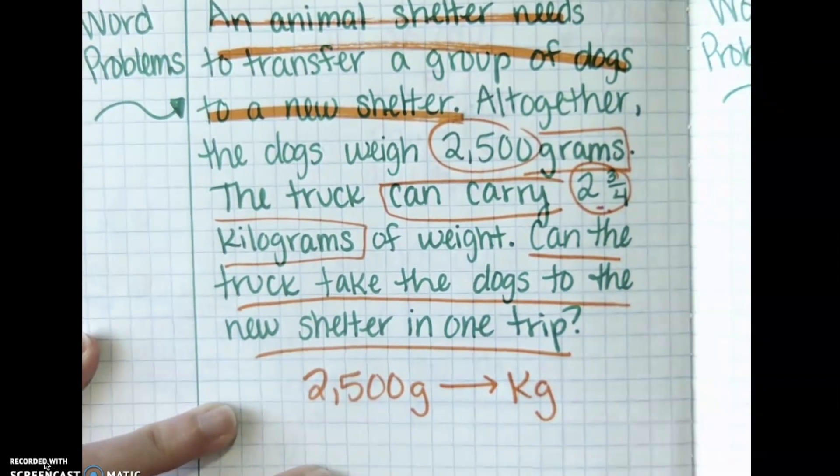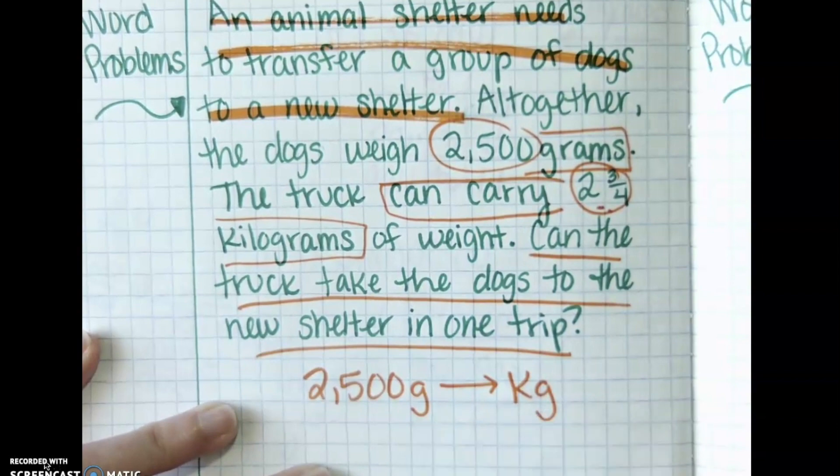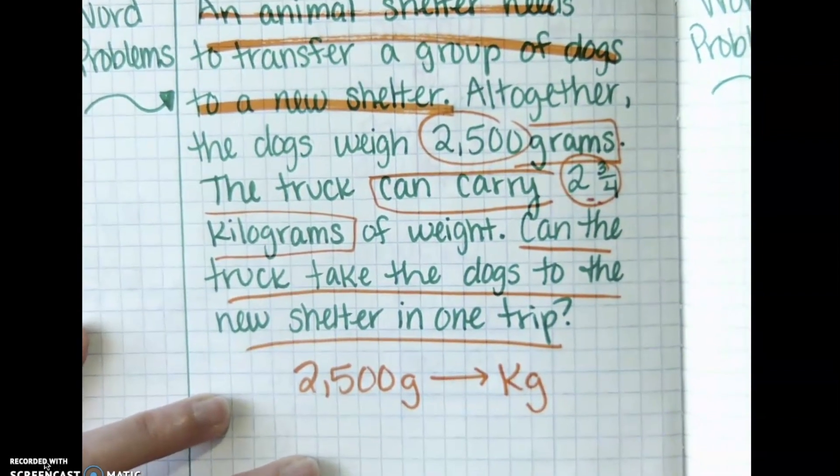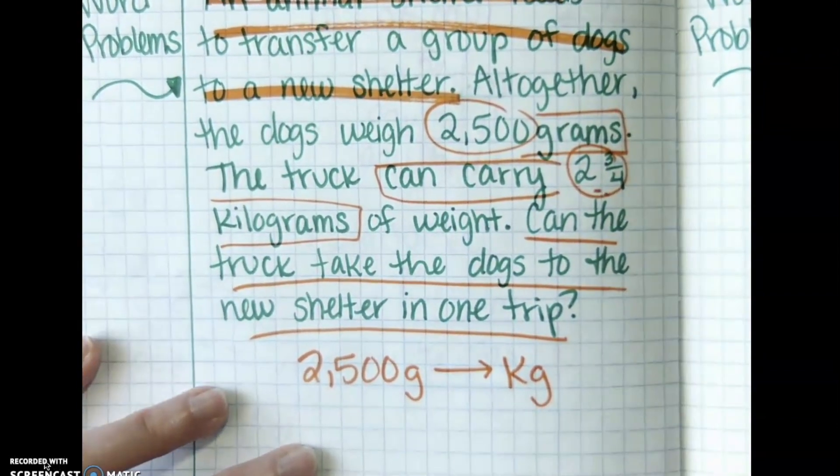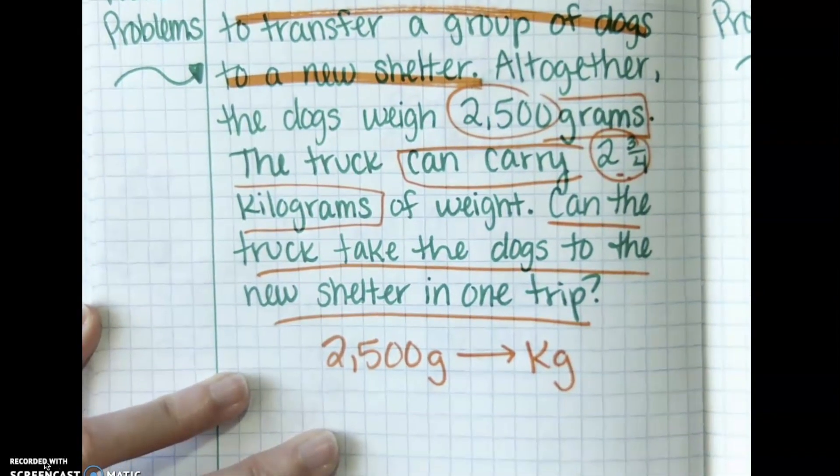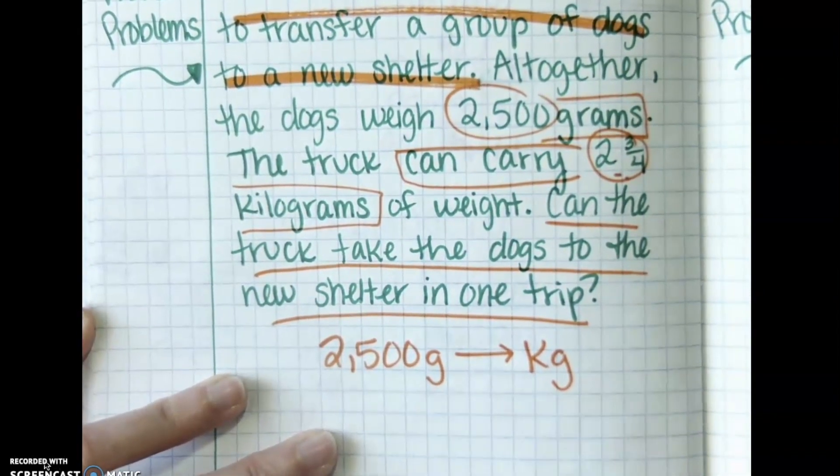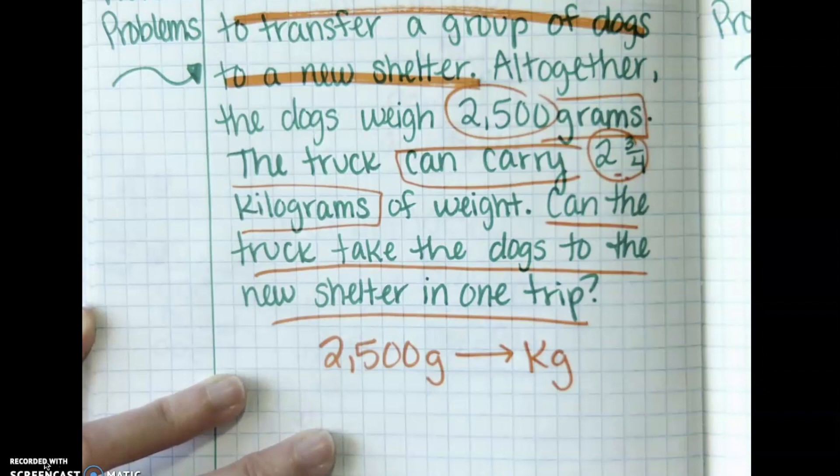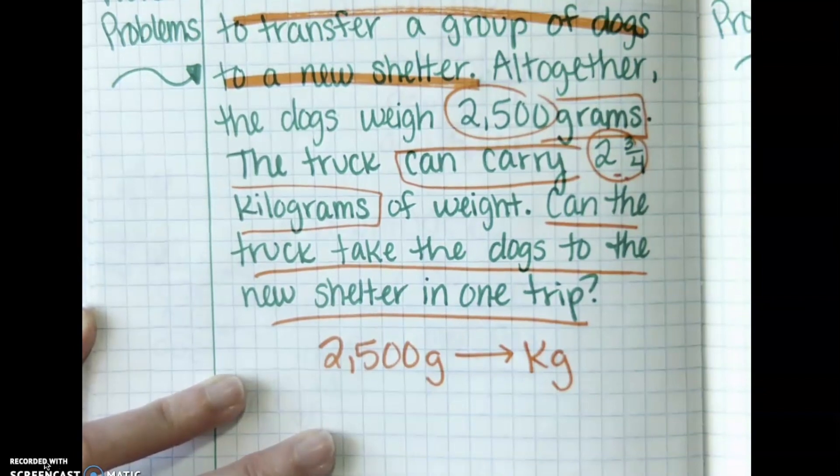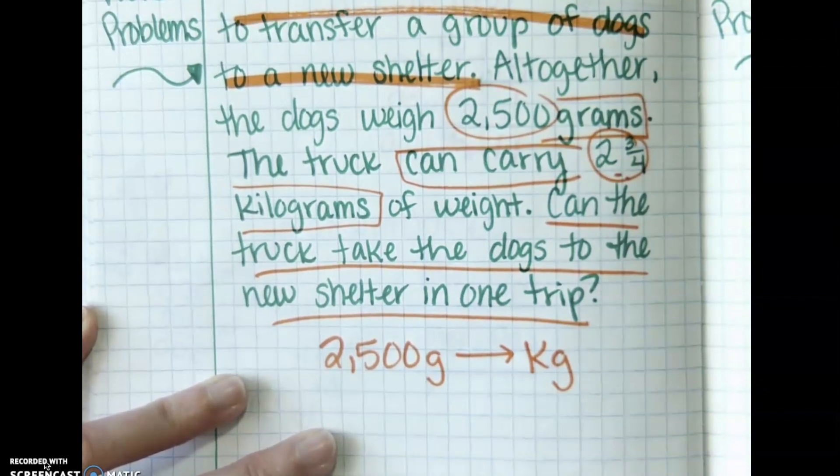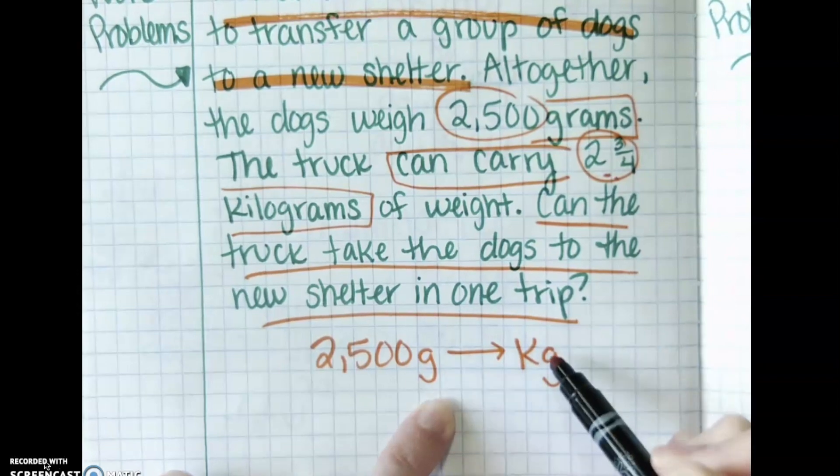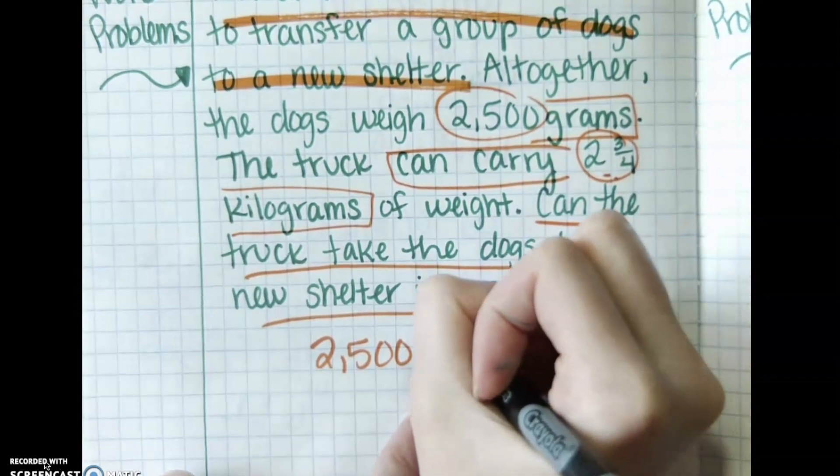All right, so I'm going from grams to kilograms. First step, figure out which operation to use. Okay, so grams to kilograms. Well, thinking about my video I watched, I know that grams are smaller than kilograms. Remember, a gram is like the weight of a feather, and then humans are weighed in kilograms, so that's a big difference. Grams are smaller, and we're going to a larger unit, so that means I have to divide.